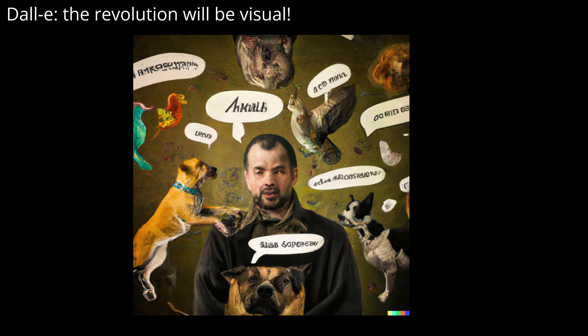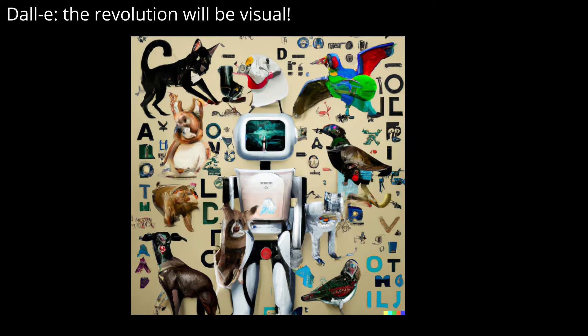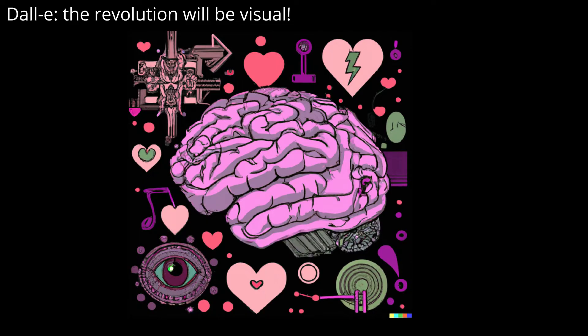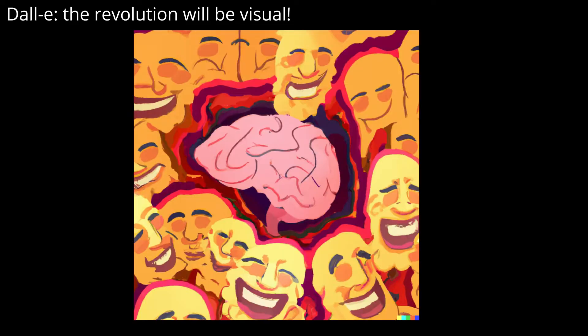And what can it do? DALI is a new artificial intelligence program that creates images from verbal instructions. It creates pictures from words. And not only that, it can create amazing images. DALI is capable of generating high-quality pictures of cats, dogs, birds, humans, and other common objects, as well as more abstract concepts such as emotion or feeling.